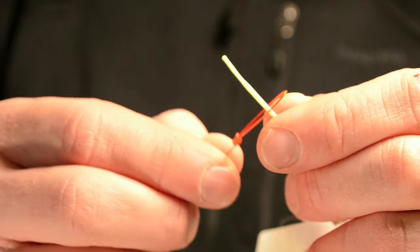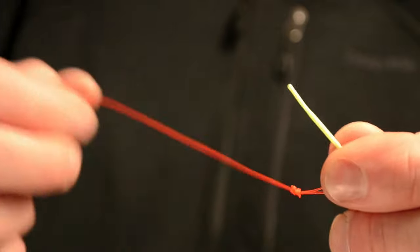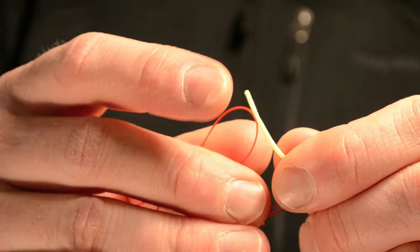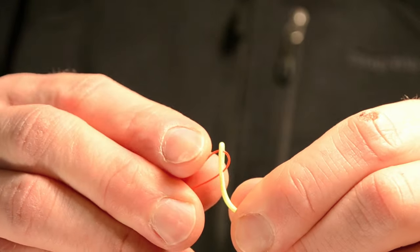Go over the end of the fly line with the loop under your leader. Go through the loop itself with your tippet or some part of your leader. Pull the leader all the way through.